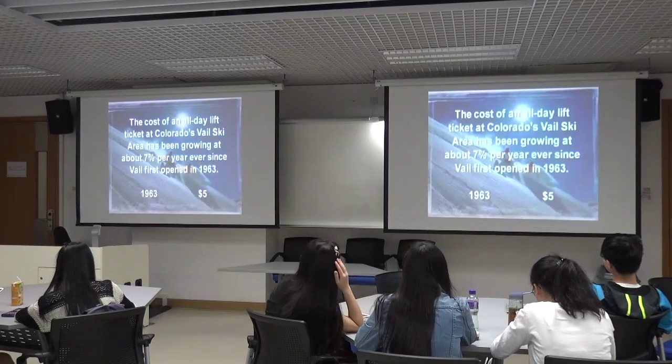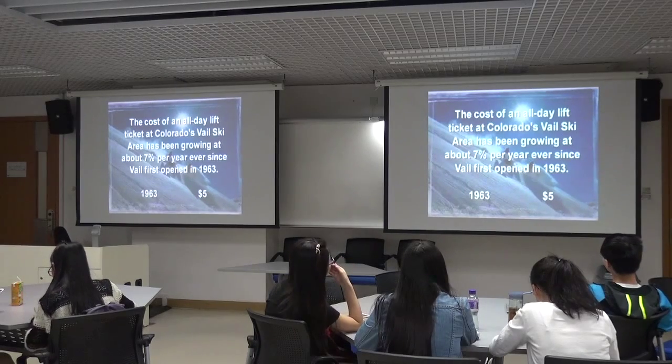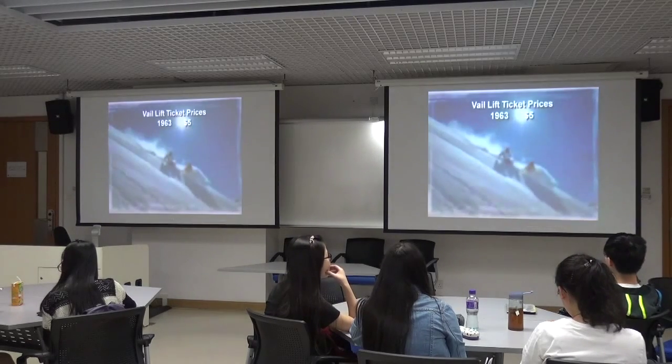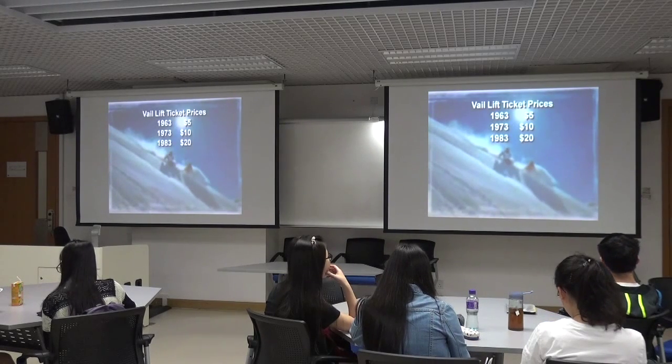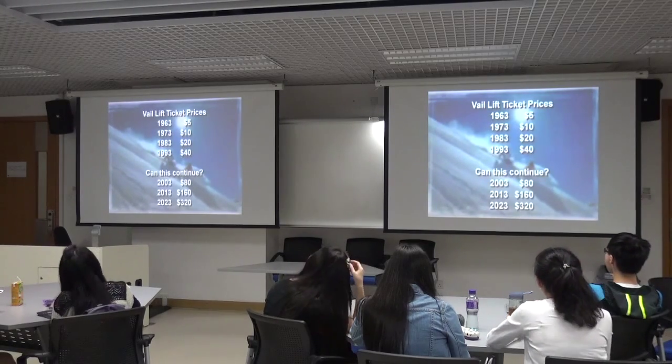Do you know what seven percent really means? The cost of an all-day lift ticket to ski at Vail has been growing about seven percent per year since they first opened in 1963, when you paid five dollars. The doubling time for seven percent growth is 10 years. So what was the cost 10 years later in 1973, 10 years later in 1983, 10 years later in 1993? And what do we have to look forward to? Most people don't have a clue.